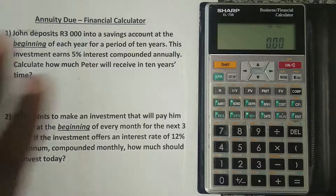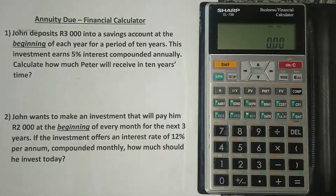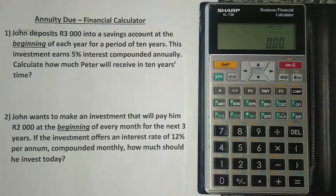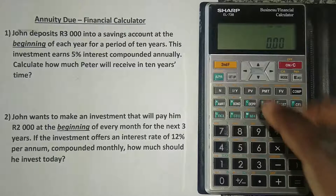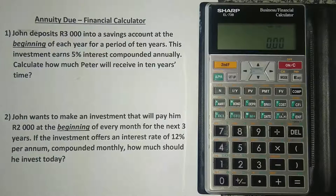We have done the same examples before using the formulas, and we explain in great detail the difference between annuity due and ordinary annuity and how it's calculated. Here's how it works with this financial calculator. The first thing you always want to do is reset or clear the memory of your calculator. Press second function, then alpha, then zero, and then zero again. Now we can begin.